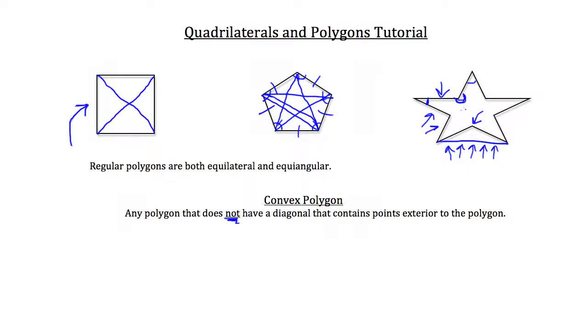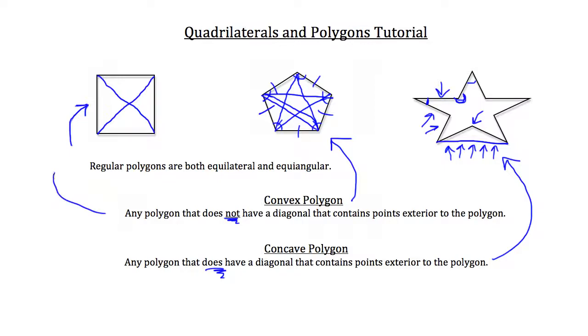Yet, when I drew the diagonal connecting those two points, I have a bunch of points that are outside the polygon. That means that this is not a convex polygon. What it is, however, is a concave polygon. It's a polygon that does have a diagonal that contains points exterior to the polygon. So the star is a good example of a concave polygon, whereas the pentagon and the square are both convex polygons.